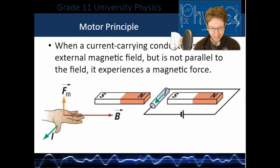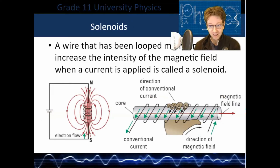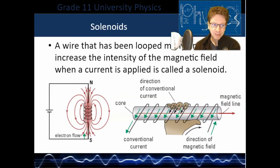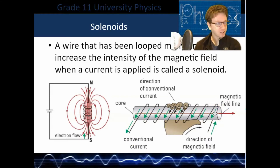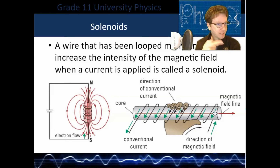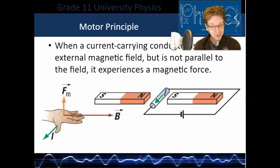Moving charges — which is what current is — create a magnetic field. The opposite is also true: a moving magnetic field can create a current. If you had no current going through a solenoid and moved a magnet through it, it would generate a current in the wire. Importantly, it always has to be moving — if you leave the magnet inside at rest, it stops creating a current. You can move the magnet in and out, or spin it inside. We'll cover this more in the next lesson when we discuss how our electrical grid generates electricity.